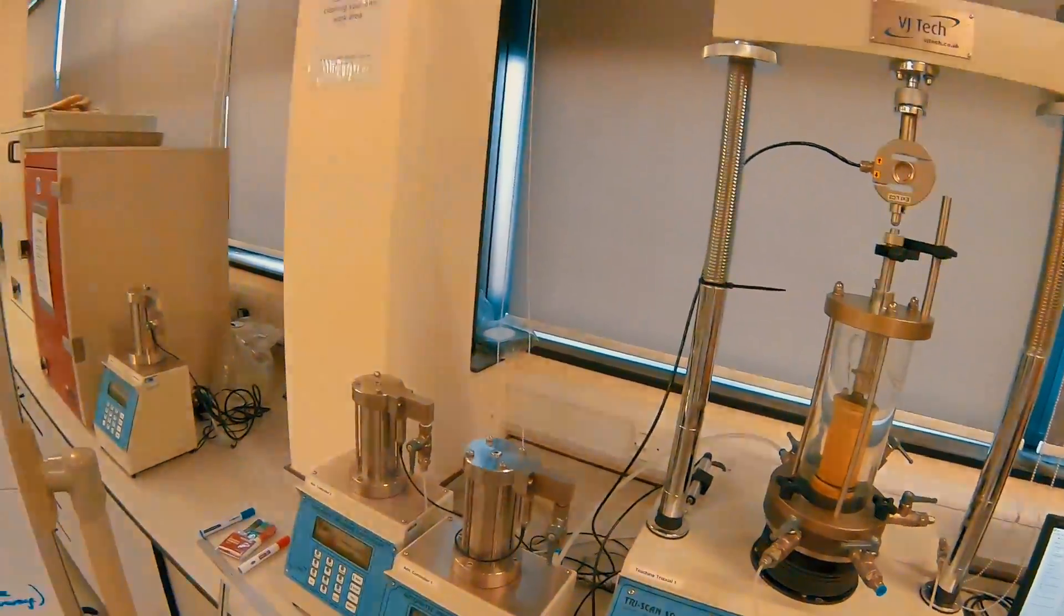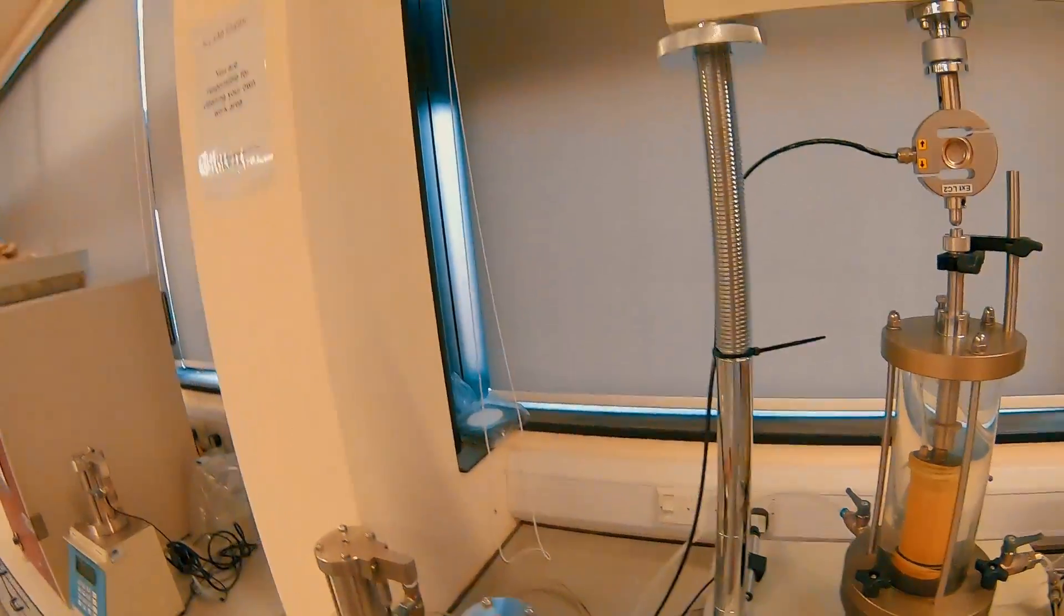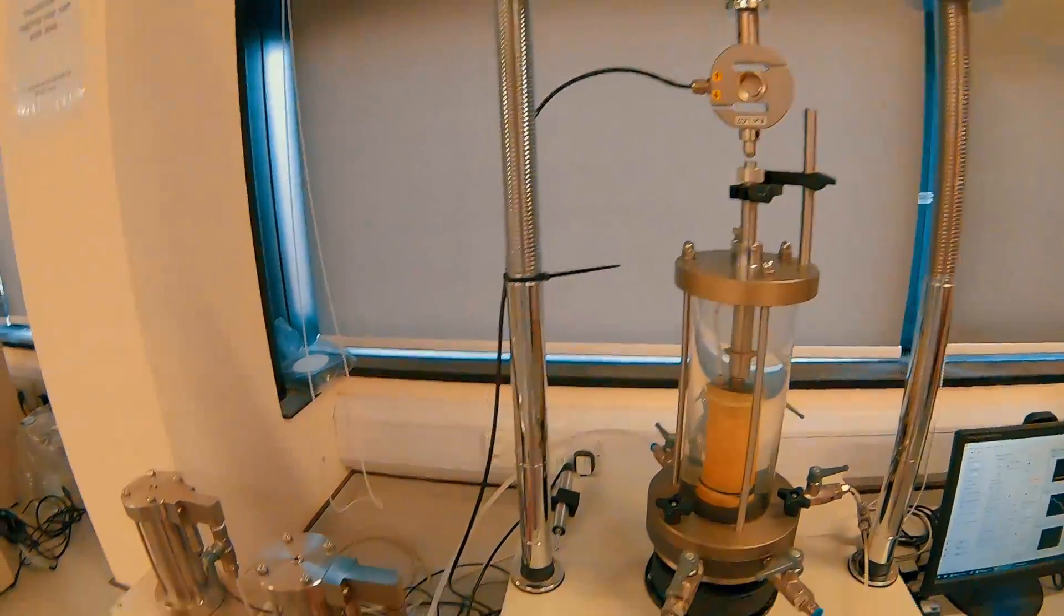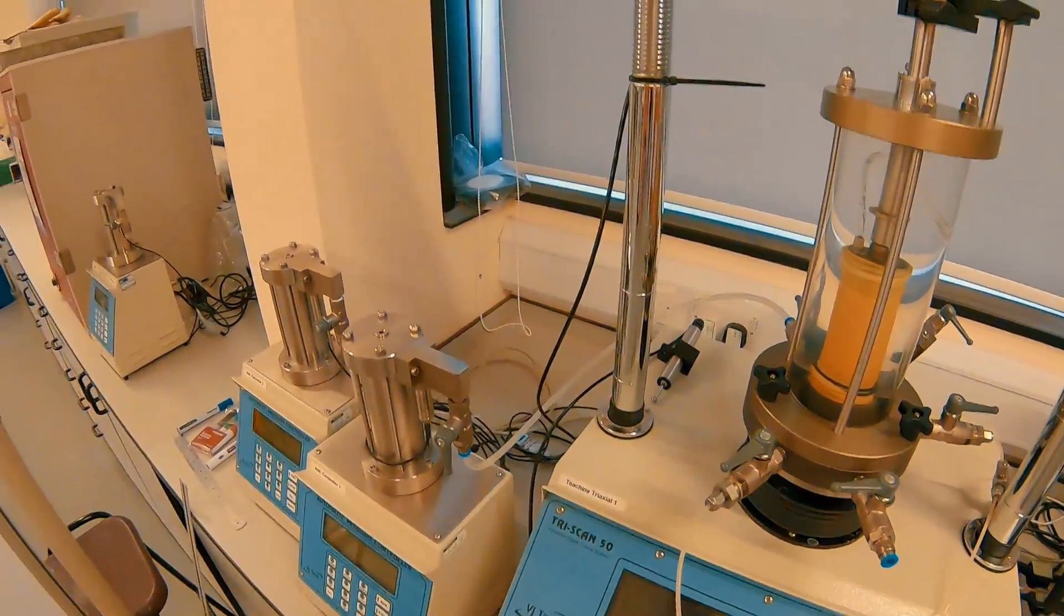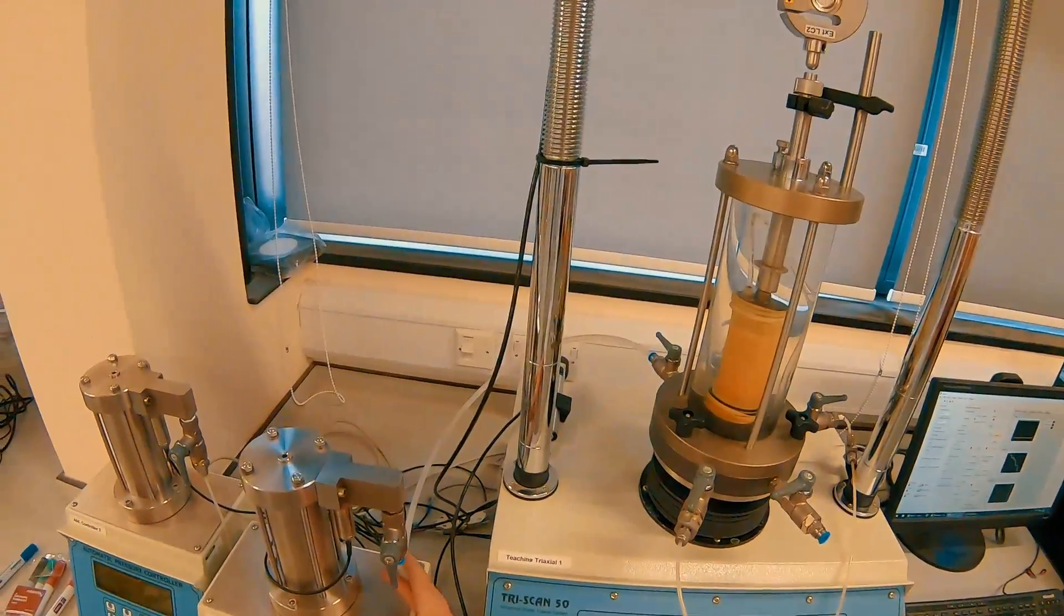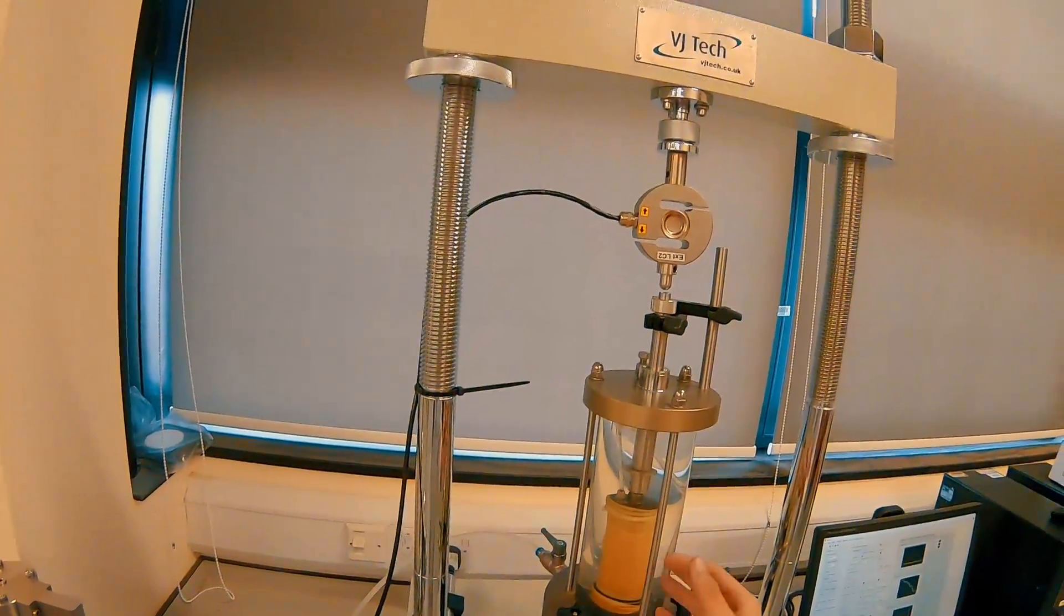The sample is connected to the back pressure controller and to the cell pressure controller. You can tell these apart the easiest way is to look at the size of the feed line going from the controller. The cell pressure control is generally, it's always the bigger of the two pipe sizes because it's controlling a much larger volume of water.